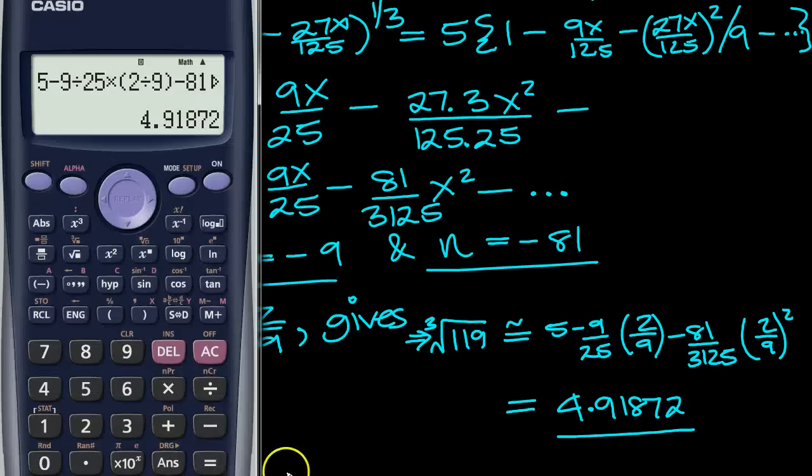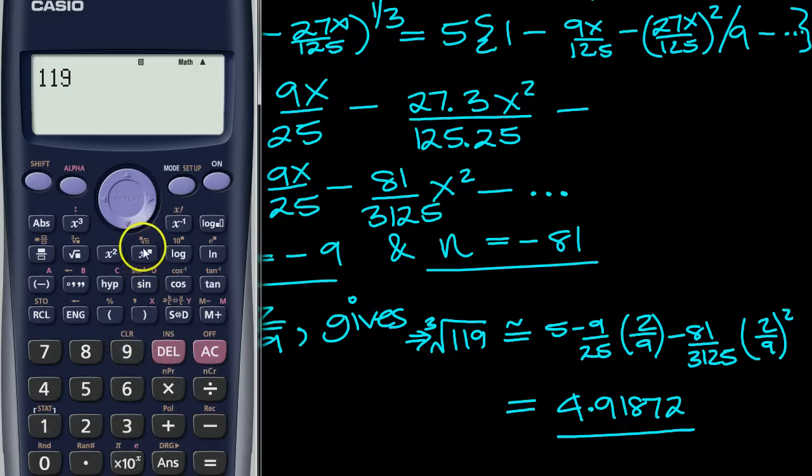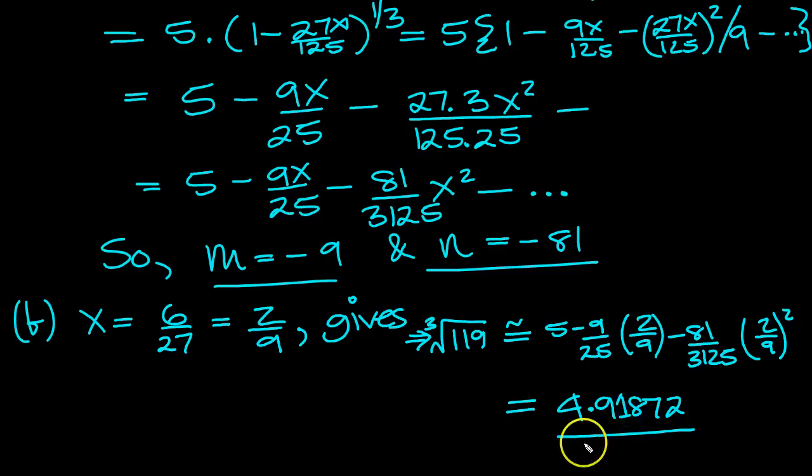And we can just use the calculator to do the cube root. So if we do, cancel, 119 to the cube root, so 1 divided by 3, just have a look at it, 4.9186,8. So we're on the right track here, aren't we? So it looks like we've got it okay, according to this calculation.